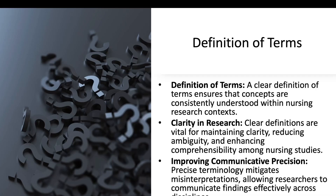A clear definition of terms ensures concepts are consistently understood within nursing research contexts. Clear definition is vital for maintaining clarity, reducing ambiguity, and enhancing comprehensibility among nursing studies. Precise terminology mitigates misinterpretation, allowing the researcher to communicate findings effectively across disciplines. If a particular term is used throughout your manuscript, you have to be consistent in utilizing and operationalizing those terms.